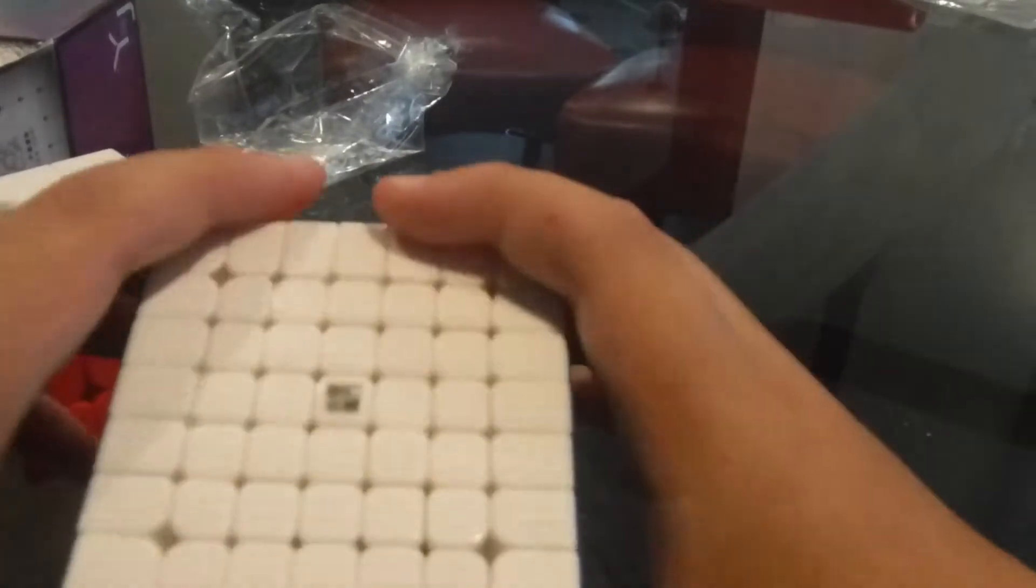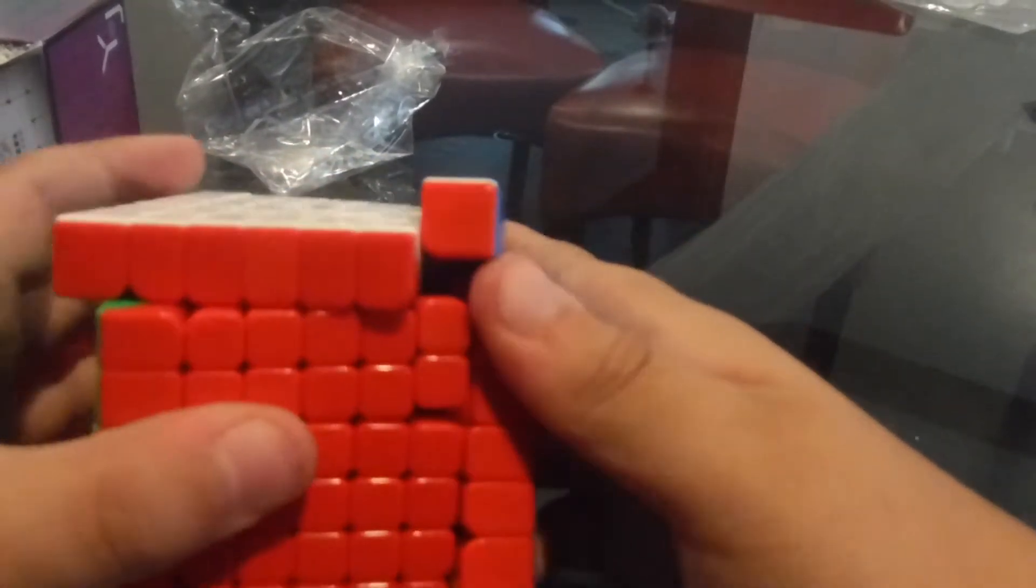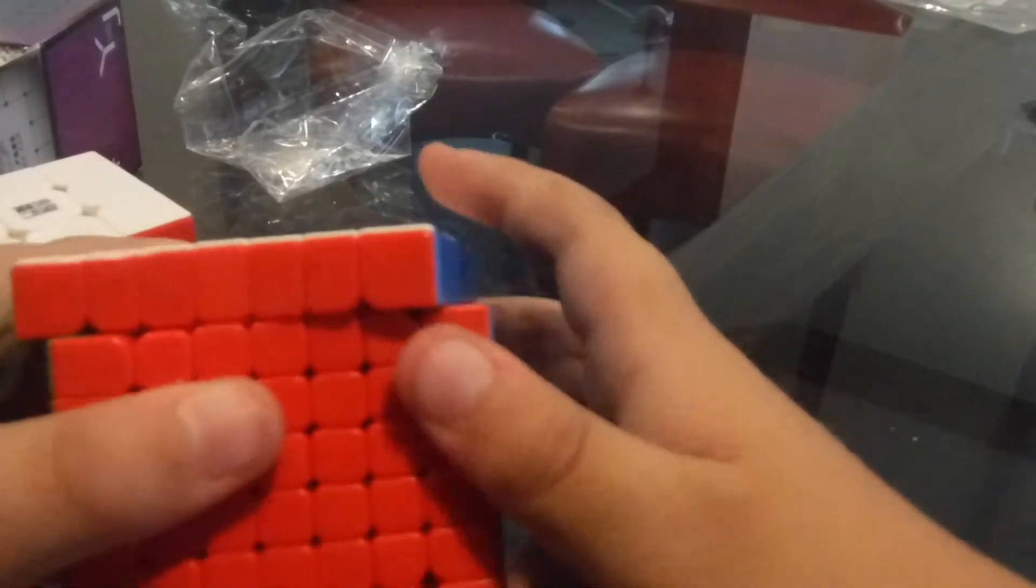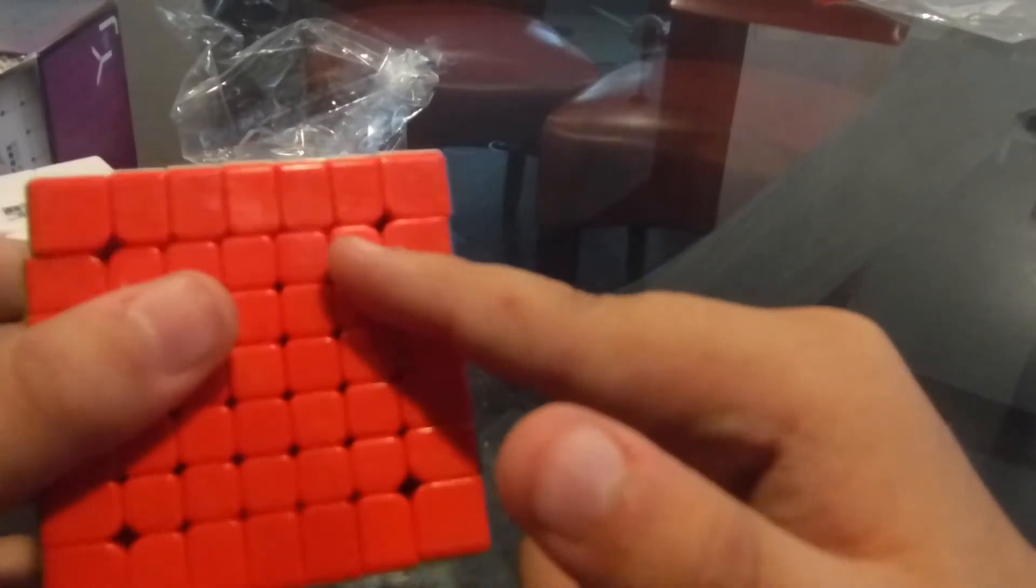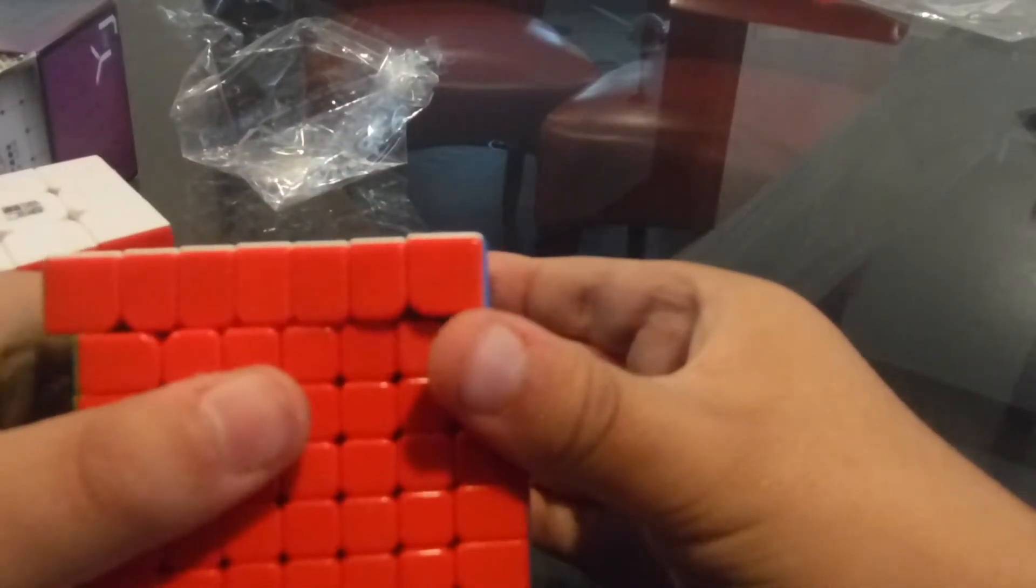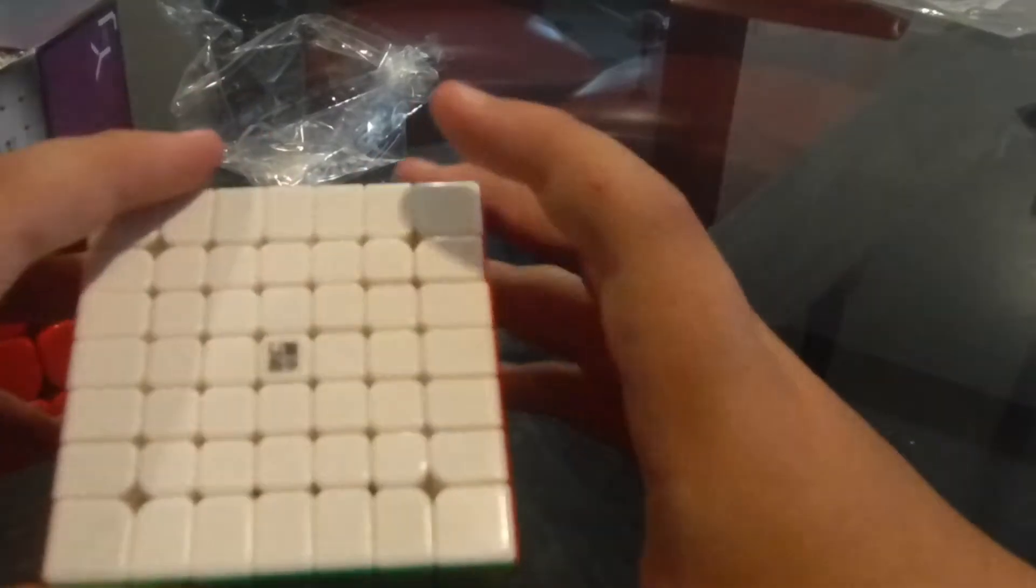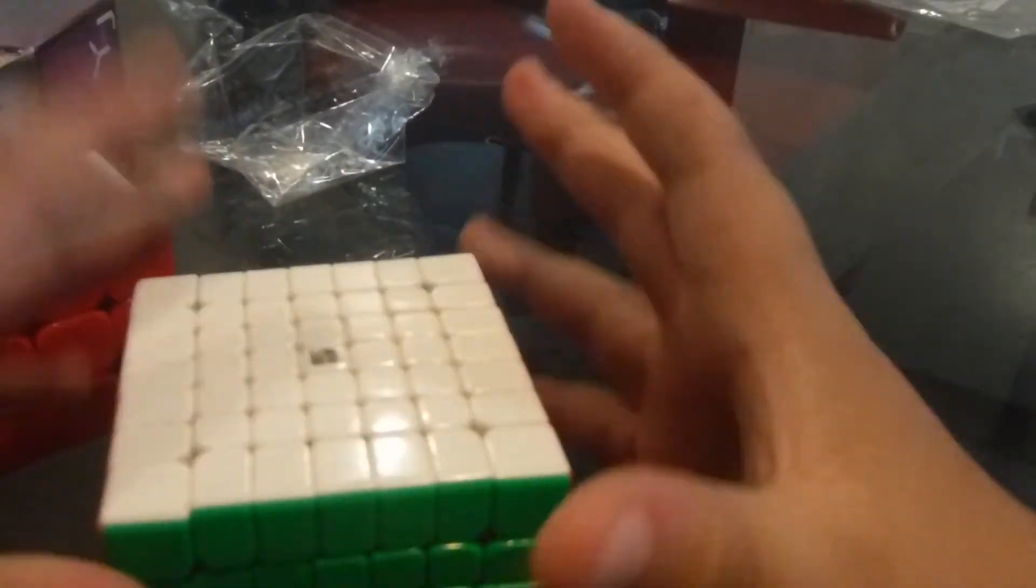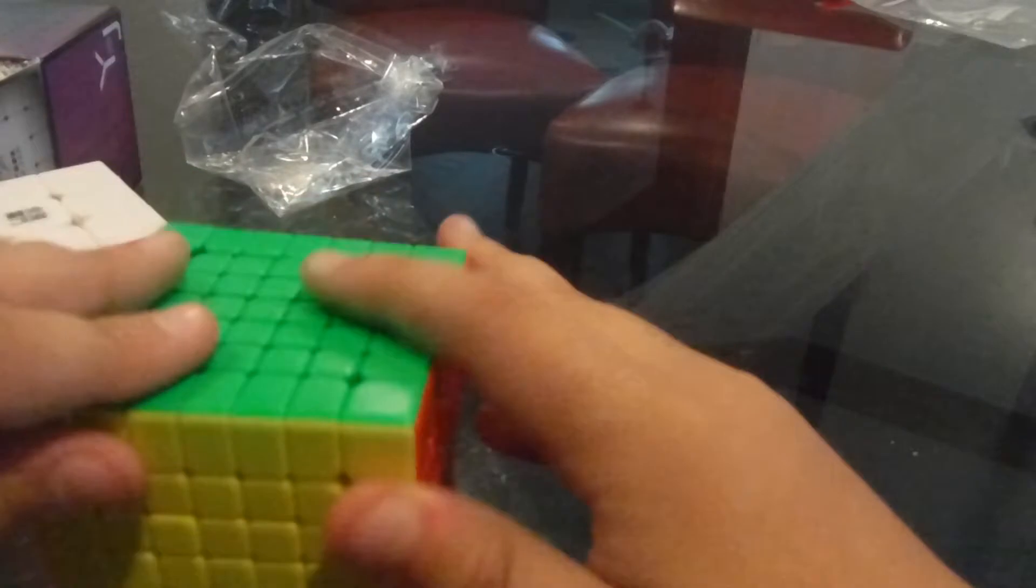I was gonna test the corner cutting, so let's test one piece at a time. Oh. I mean, it goes about to here. It's not that good corner cutting, but also it's a really big cube. This is really big. Very smooth. The inner layers on the bigger YJ puzzles just get nicer. The outer layers aren't that good.